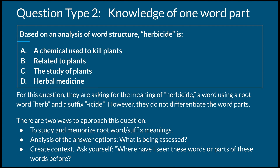There are a couple of different ways to approach a question like this. The first is to study and memorize the root word and suffix meanings — if you understand them and understand how they work together, this question will be very simple. Next is an analysis of the answer options. If you see answer options A, B, C, and D, they all have to do with either herbs or plants. So we can simply single out that suffix -cide. Finally, we could create context — ask yourself where you've seen these words or parts of these words before.